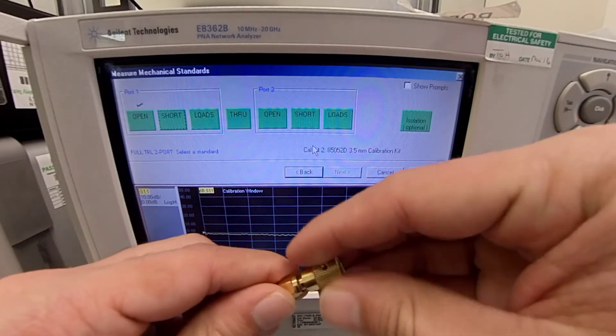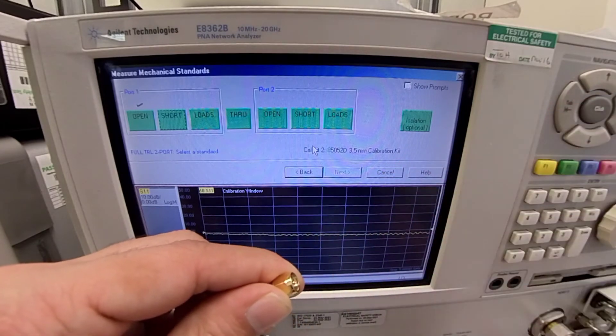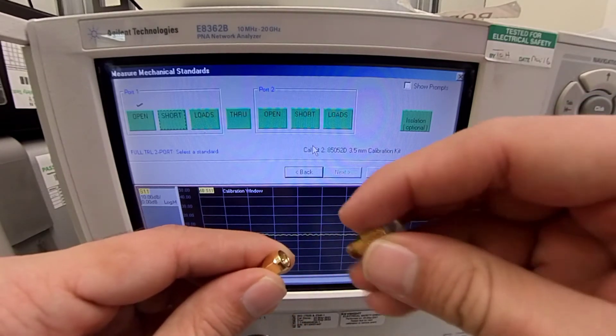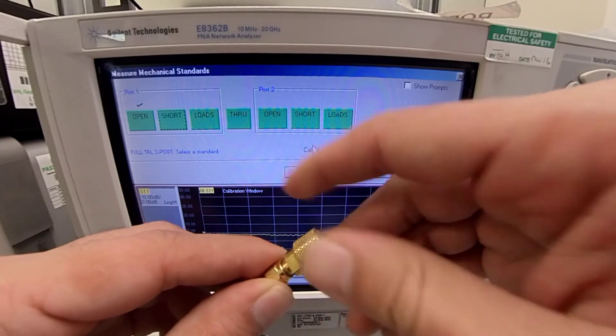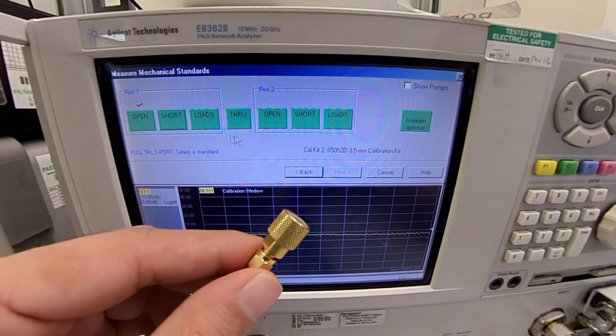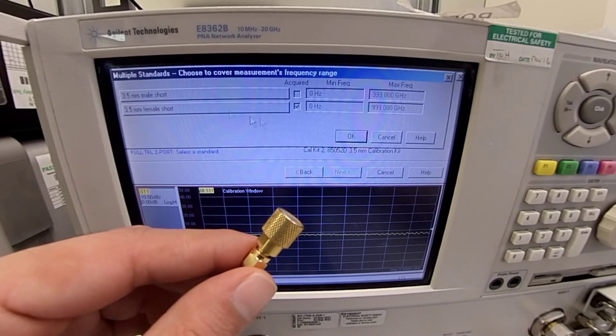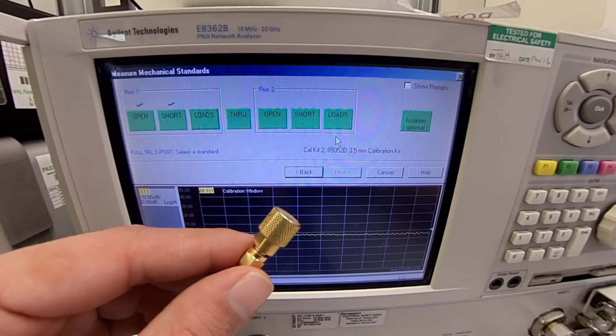Now, we select the short circuit load. Now, we press short, female, press OK. And we are done.